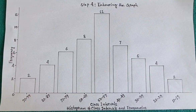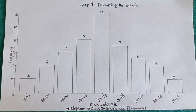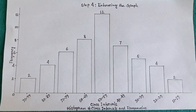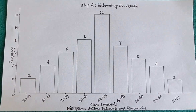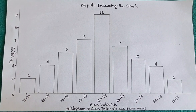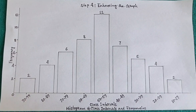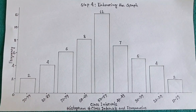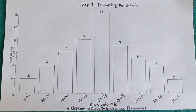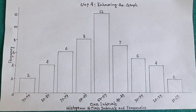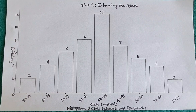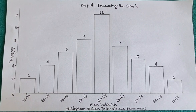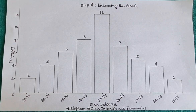Step 4: Enhancing the graph. Once all the bars are plotted, let's enhance the graph. Add grid lines to make it easier to read the frequencies. Label each bar with its frequency value above it for clarity. Finally, give the graph a title: "Histogram of class intervals and frequencies."